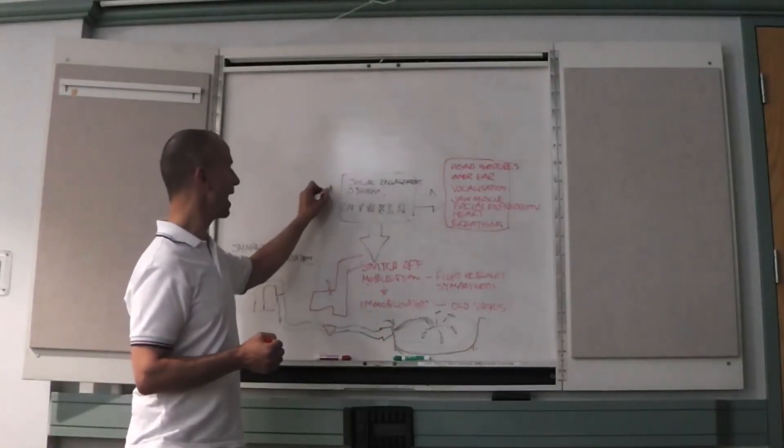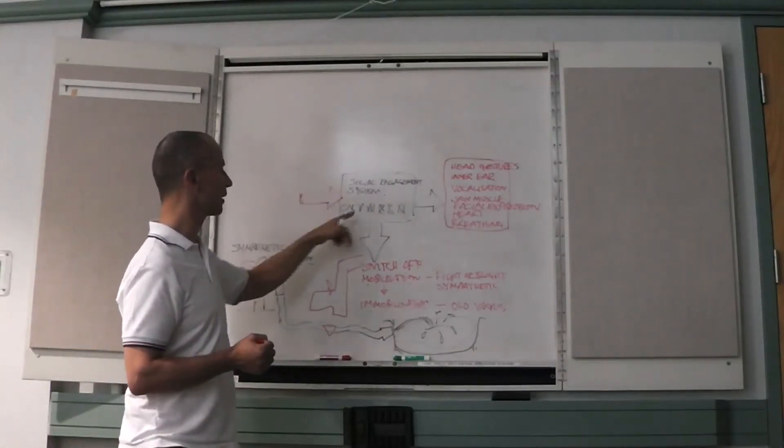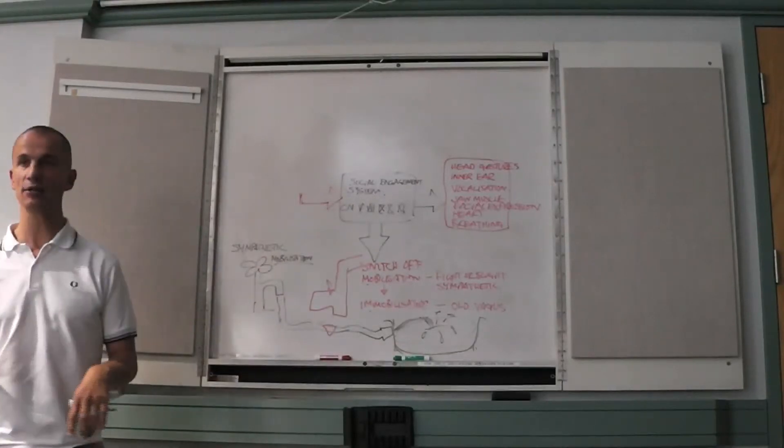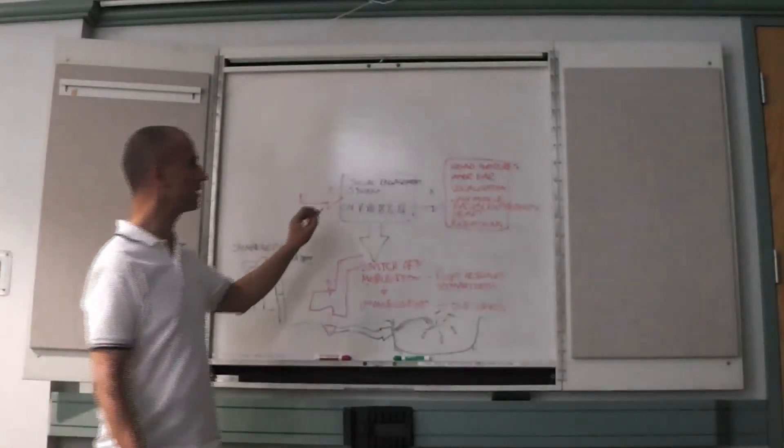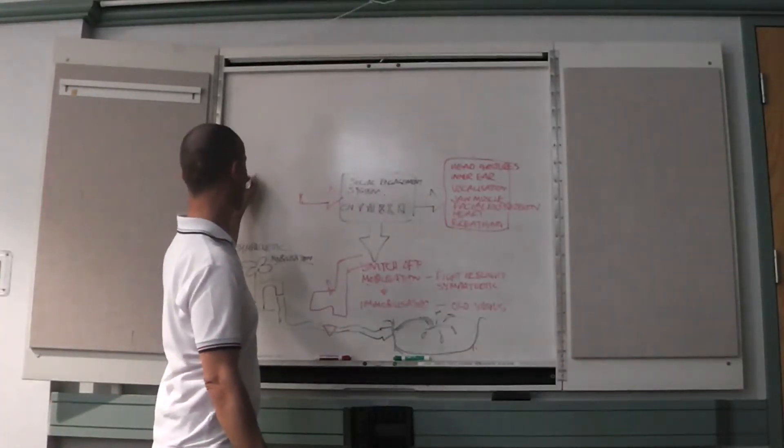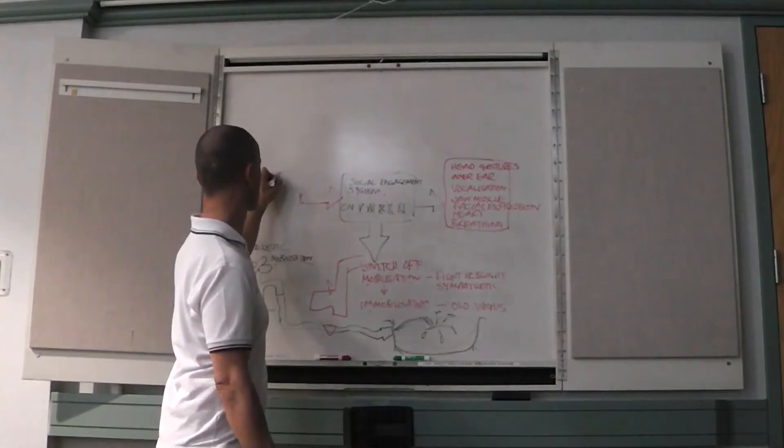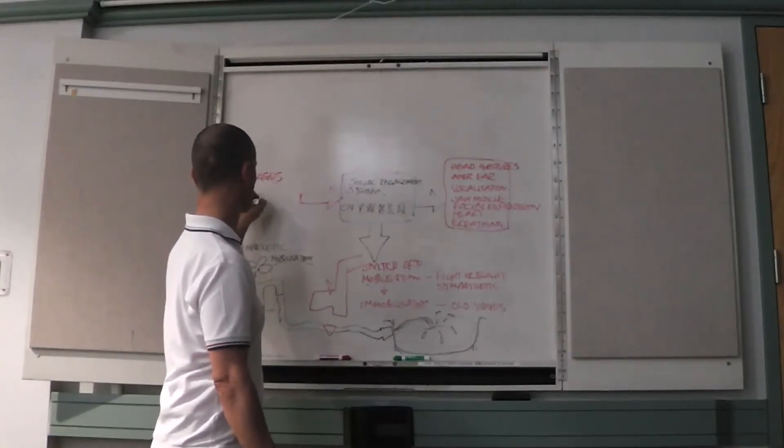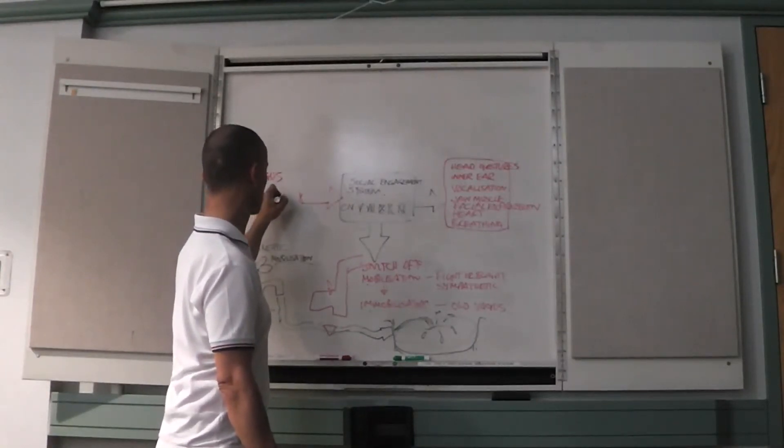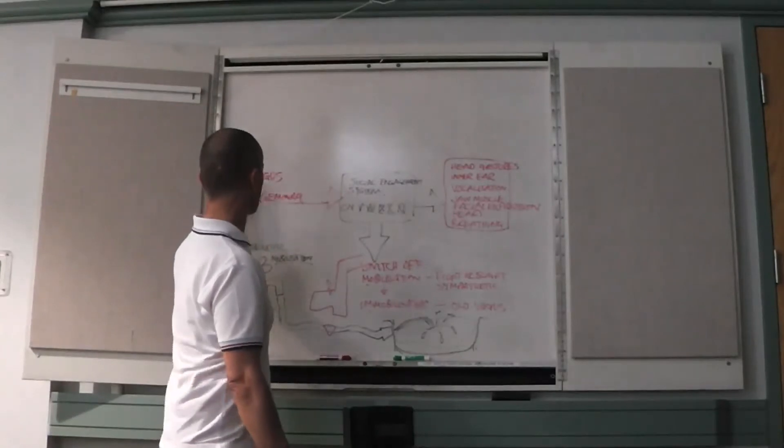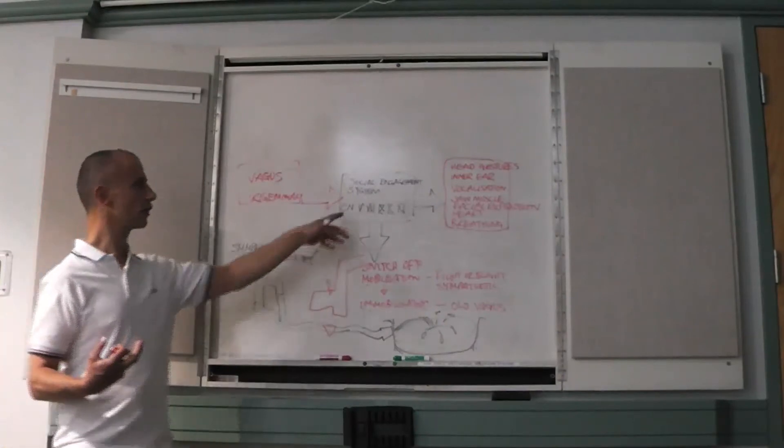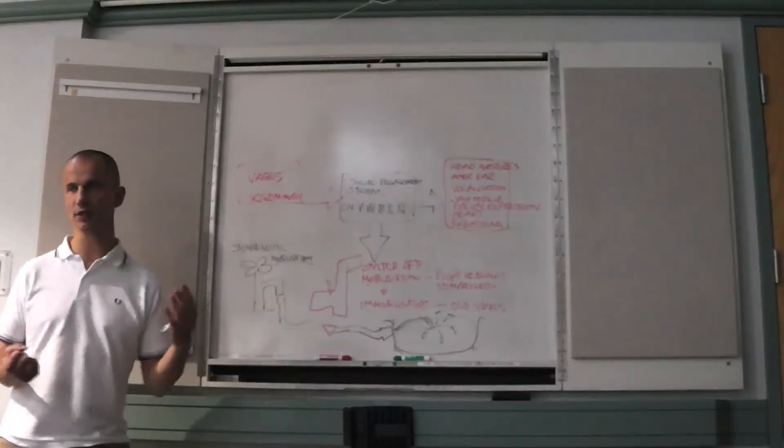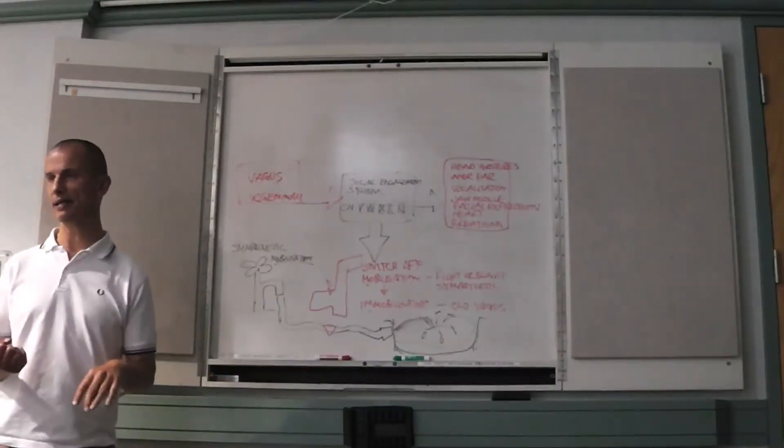So how might we do that? Well, how do we stimulate social engagement is we feed the social engagement good information. So the big sensory inputs into social engagement are the vagus and the trigeminal. So these are the pathways, these are the sensory information sources that go into the social engagement system and reboot it, make it work better.